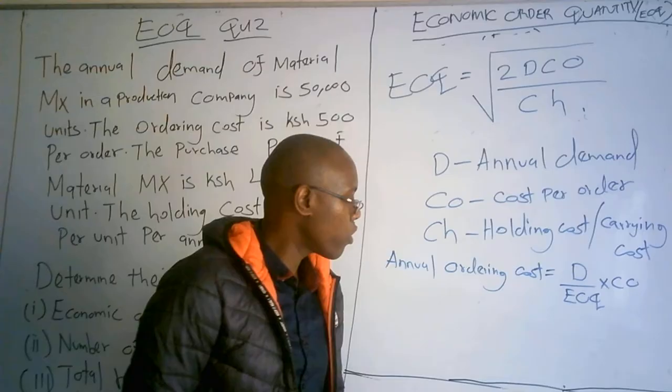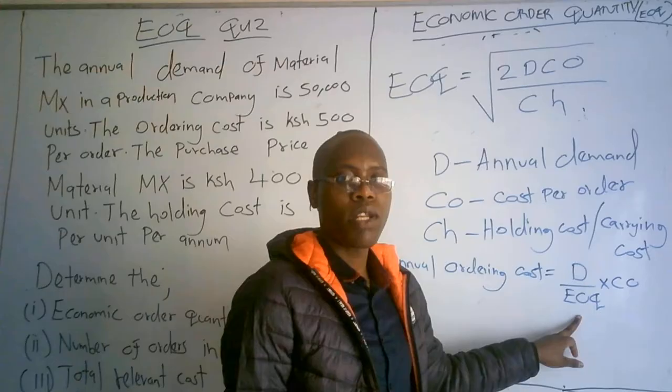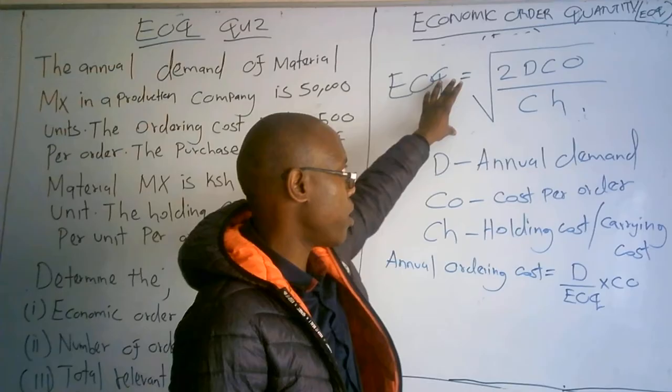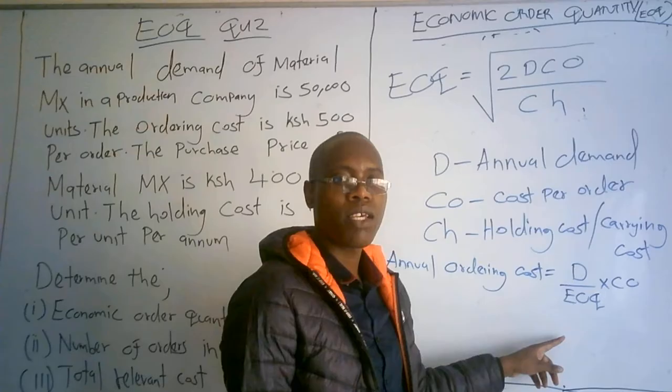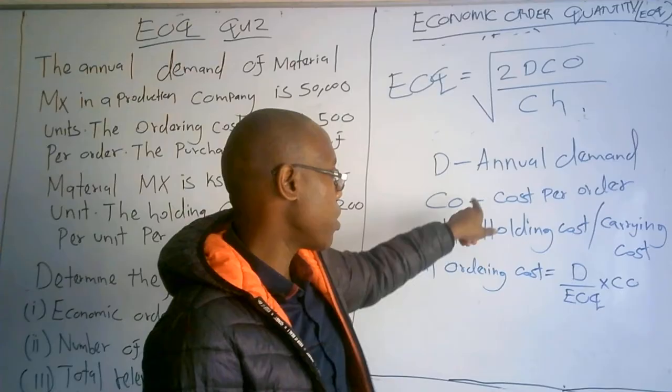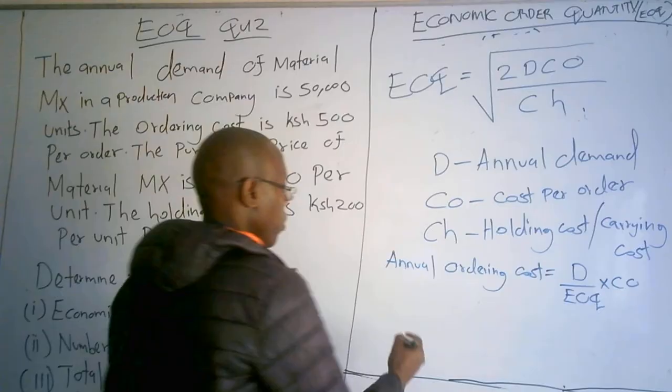The annual ordering cost is calculated as D over EOQ, multiplied by the cost per order CO. So you take the annual demand, divide by the economic order quantity you calculated, and multiply by the cost per order.